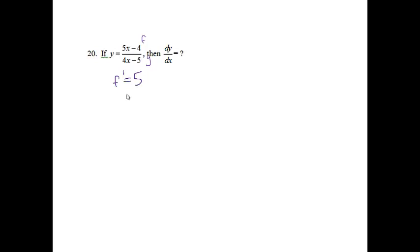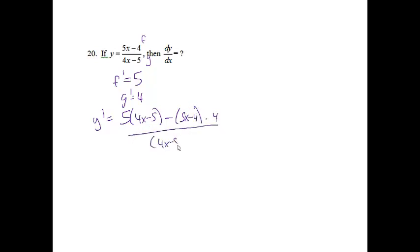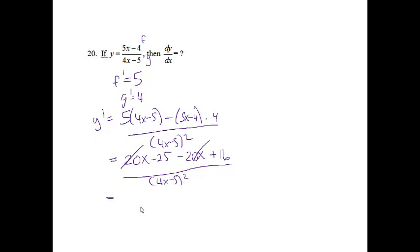Last problem. If y equals 5x minus 4 over 4x minus 5, then dy/dx equals — this is just asking me to find the derivative. I have a fraction, so I'll use the quotient rule. f prime equals 5, g prime equals 4. So dy/dx equals 5 times (4x minus 5) minus (5x minus 4) times 4, all over (4x minus 5) squared. Simplifying: 20x minus 25 minus 20x plus 16 over (4x minus 5) squared. The x terms cancel, giving negative 9 over (4x minus 5) squared. That is my derivative.